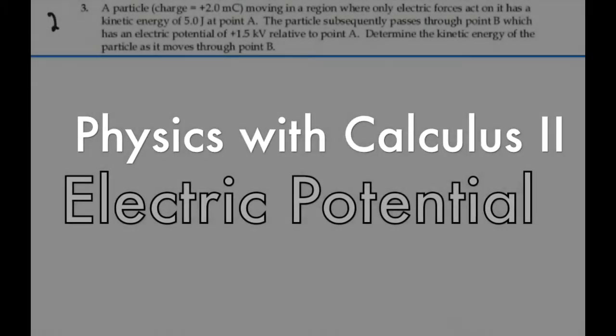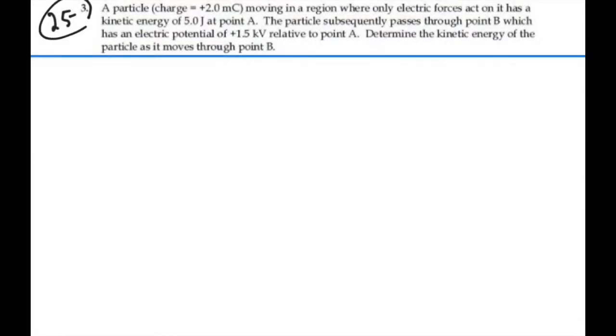Here's problem 25.3. A particle charged 2 millicoulombs moving in a region where only electric forces act on it has a kinetic energy of 5 joules at point A. The particle subsequently passes through point B, which has an electric potential of plus 1.5 kilovolts relative to point A. Determine the kinetic energy of the particle as it moves through point B.